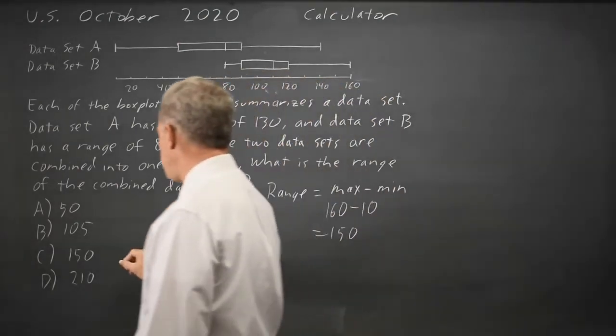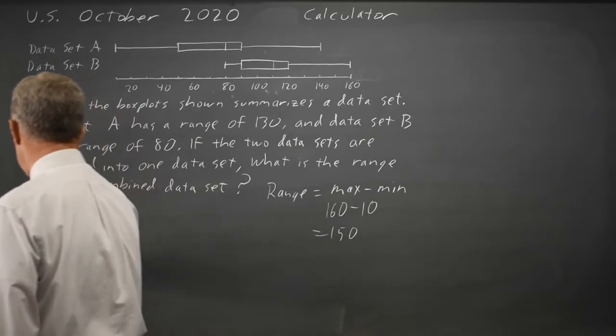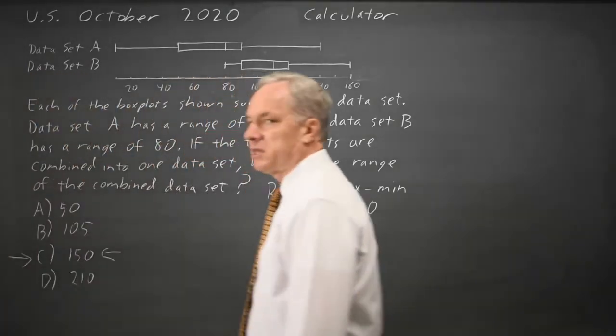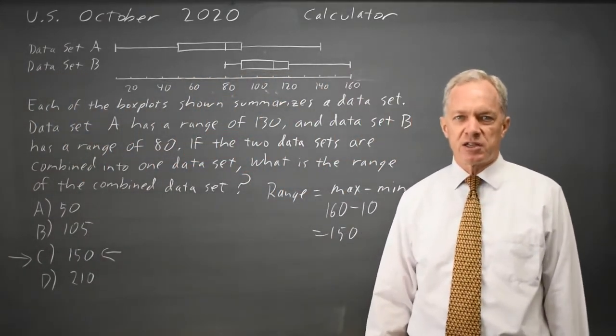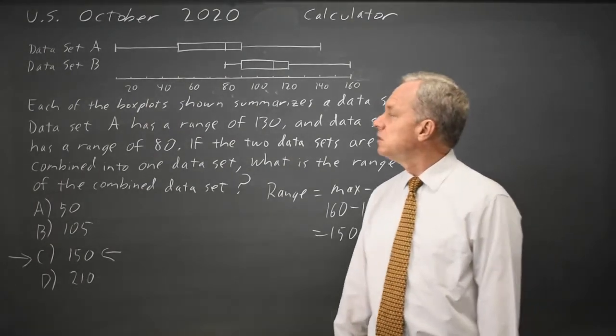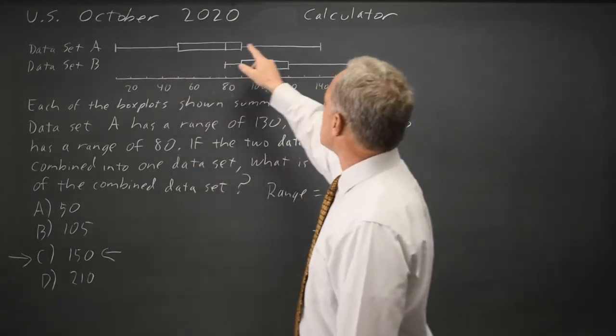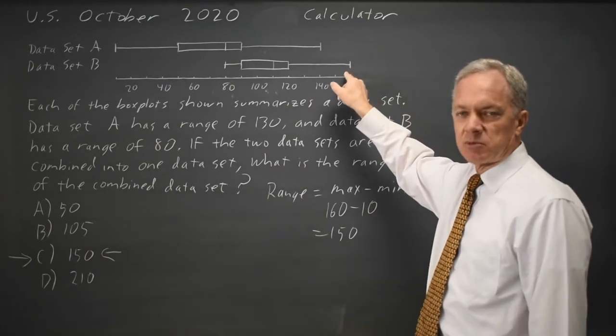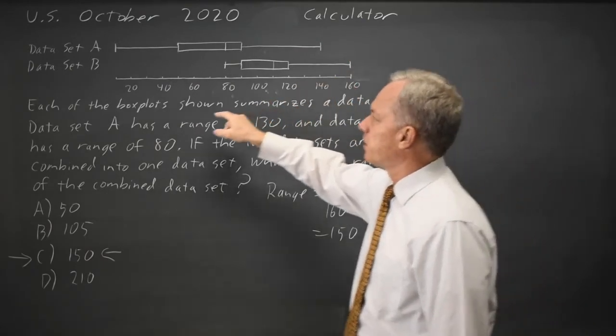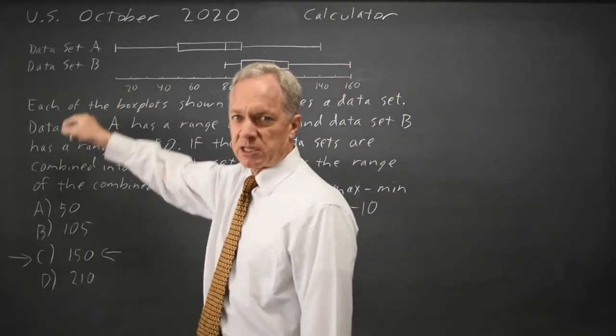So the range would be 150 because when we combine the data sets that doesn't change the values of any of the observations. It just gives the combined data set a maximum equal to the maximum of the two input data sets and a minimum equal to the minimum of the two input data sets.